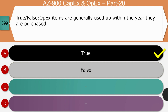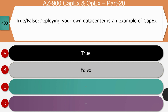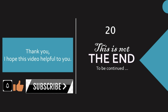True or false: Deploying your own data center is an example of CapEx. The right answer is true. Deploying your own data center requires purchasing all the infrastructure upfront before it can be used — servers, storage, network switches, leasing or buying office space, and required cooling units — all of which are classified as CapEx.